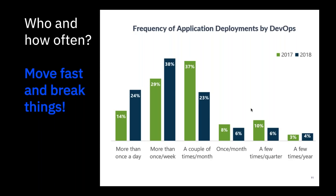A lot of people say we need to move fast and break things. If something goes wrong, you create a process to recuperate — just like Eric said, you get your previous version from the binary repository, you have an automated process to get that back in place, and it might even take seconds to revert back to your previous version.